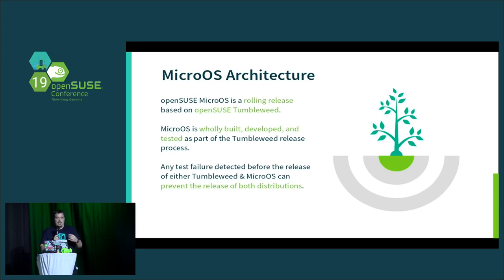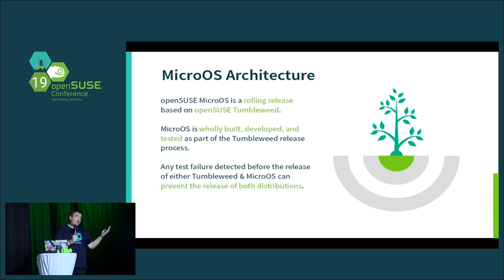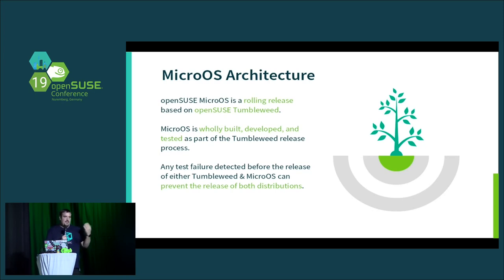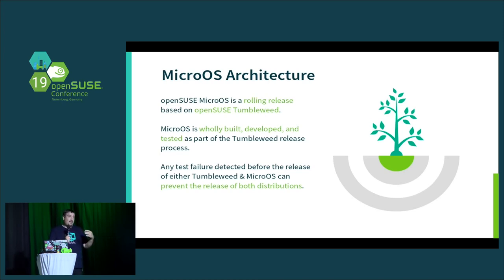It's a rolling release based on Tumbleweed. We're building it totally as part of the Tumbleweed project — tested in the Tumbleweed project, built in OBS, actually part of the Tumbleweed release process. If Tumbleweed breaks MicroOS, neither gets shipped, and vice versa. If you're using Tumbleweed, you know the quality — and MicroOS is part of that same level of always usable. With transactional updates as the only way of doing it, in some respects it's a safer version of Tumbleweed to use, because it can roll itself back if things go wrong.